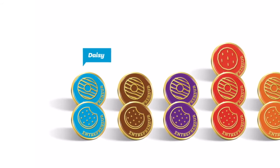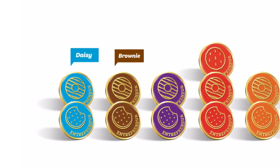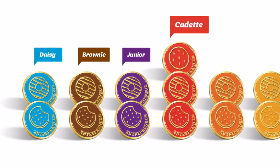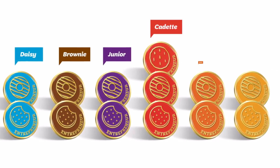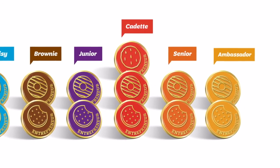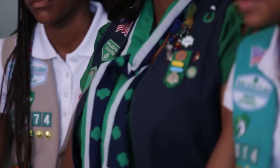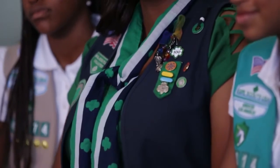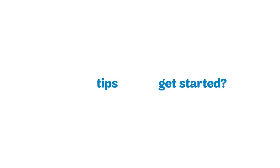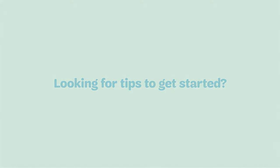Inside of the cookie program Family Meeting Guide, you'll find age-specific activity sheets that families can work on together to earn a cookie entrepreneur family pin. This new collection is the latest addition to the cookie program and celebrates each family's teamwork. Need help getting started? Ask your council for a copy of the Volunteer Toolkit User Guide.